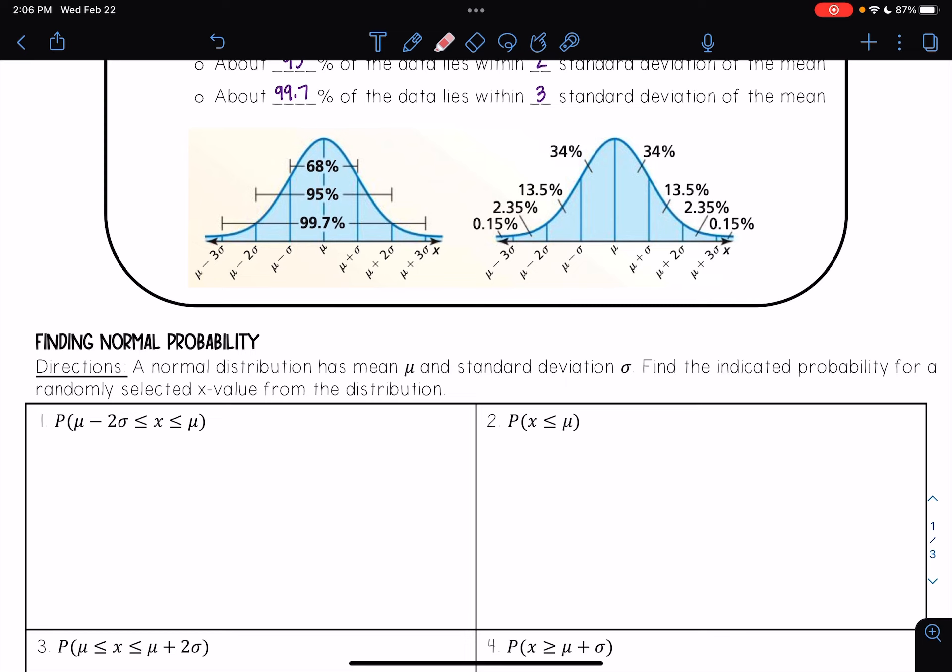And I'm going to look to see what those areas are or what those percentages are between those two values. So I have μ - 2σ, I see that right here. And I want to see all the way until μ. So I'm looking at these two areas. And so I see those correspond with 13.5% and 34%. And so that means this is just going to equal 0.135 plus 0.34. And when I add those, I get 0.475.